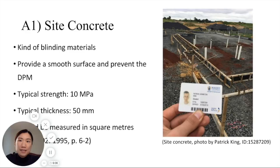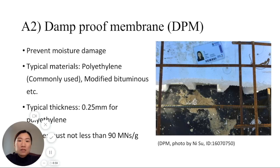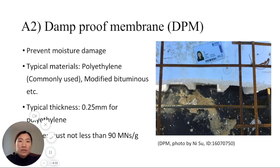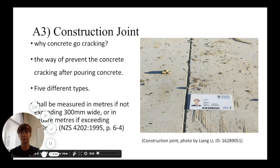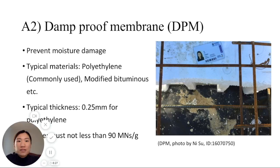Part A2 is DPM. The purpose of DPM is to prevent moisture damage from the ground to the concrete slab. The most commonly used material is polyethylene with a typical thickness of 0.25mm. The gauge of DPM refers to the ability to prevent water and must be not less than 90MNs per gram. According to New Zealand Standard 4202, the damp proof sheeting should be measured in square meters.